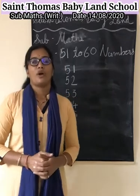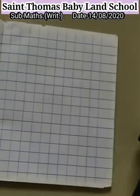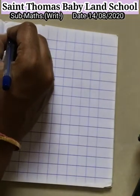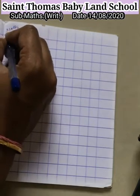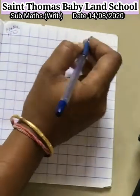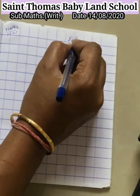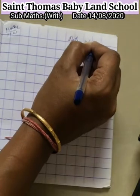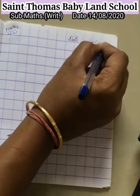Like this way you have to write in your square line book. I will show you. Okay children. Write here — mention subject: Maths, Homework. Here you have to mention the date: 14, 08, 2020.